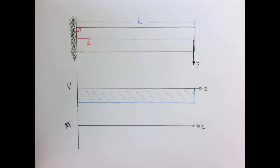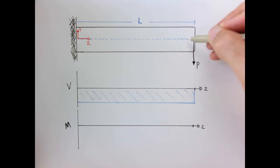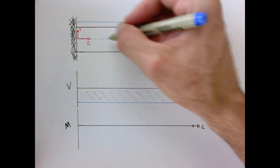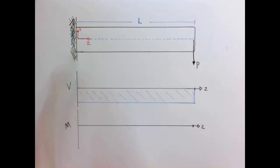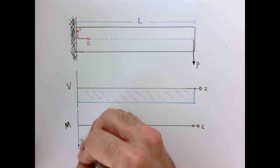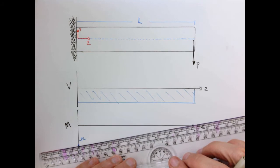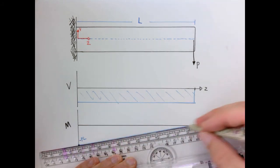The bending moment is also easy to get. If I slice the beam near the free end, there's no bending moment because the force acts over a very small distance. As we move toward the wall, the bending moment increases. We have a maximum bending moment at the wall with value P·l, and at the free end it's zero — the bending moment increases linearly from the free end back to the wall.